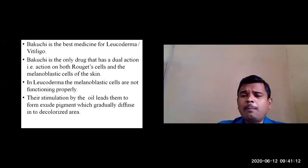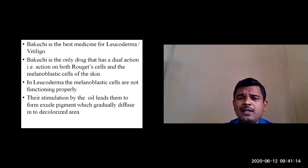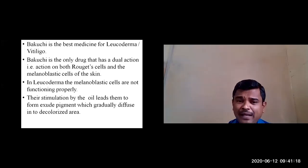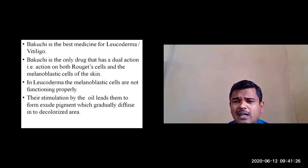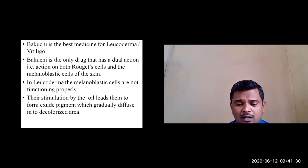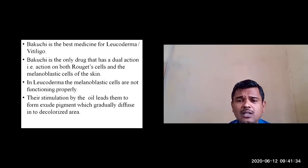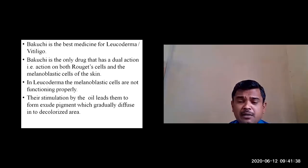Why is Bakuchi or Aval Guja considered best (Shreshtha) in case of Shvitra or vitiligo? Based on information from international journals, Bakuchi is the only drug that has a dual action. Drug action is generally due to stimulation, depression, irritation, or replacement — and Bakuchi operates through this dual mechanism on the skin.